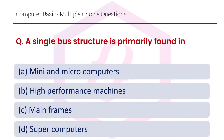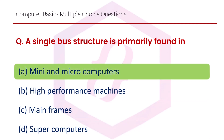A single bus structure is primarily found in: option A mini and microcomputers, option B high performance machines, option C mainframes, option D supercomputers. The right answer is option A, mini and microcomputers.